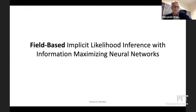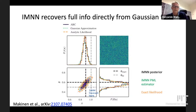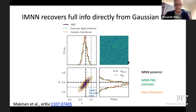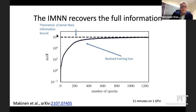Rather than pre-compressing to power spectra, let's go to the field. Here is a demonstration that this technique recovers the full information directly from the Gaussian field — just putting in the entire field simulation. It turns out you can get posterior contours that are exactly correct. This is a case where we know what we should get and we do get it. You can see this because for this case we understand everything — we can compute the theoretical information bound, the Cramér-Rao bound, and see how this information bound is approached as we train the network. It's described in this paper, and this is quite fast — just 11 minutes on one GPU.